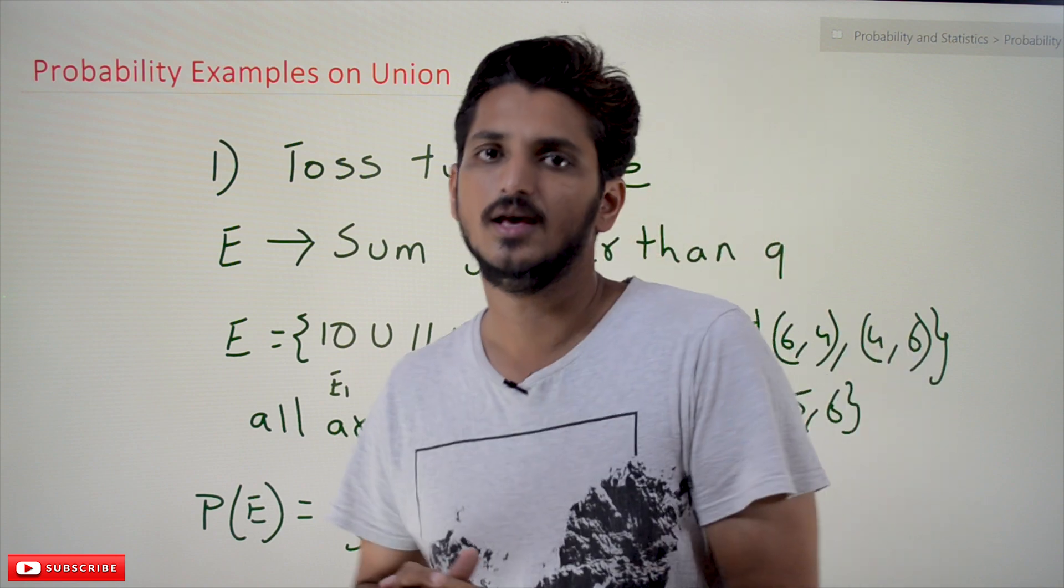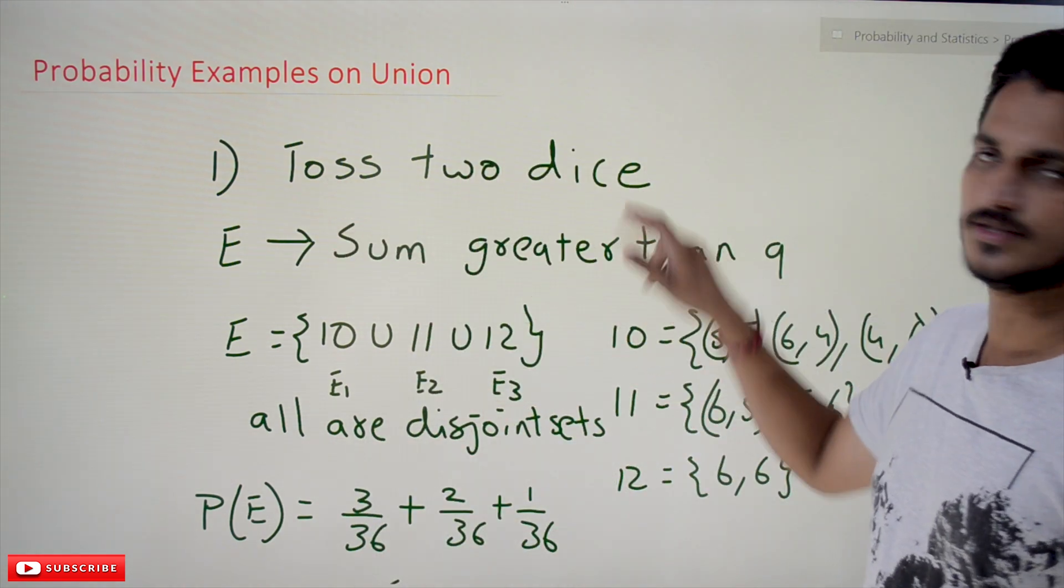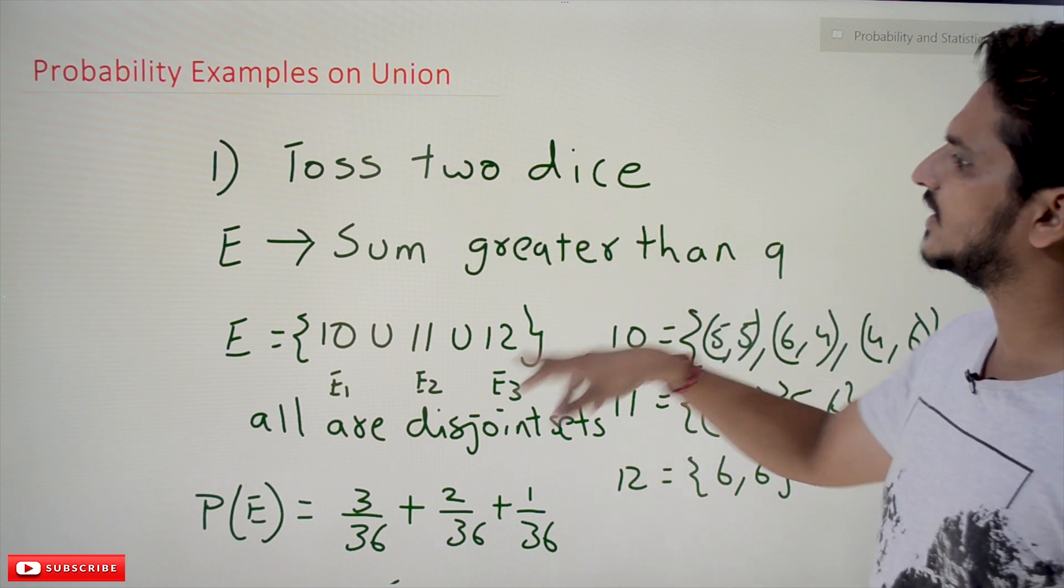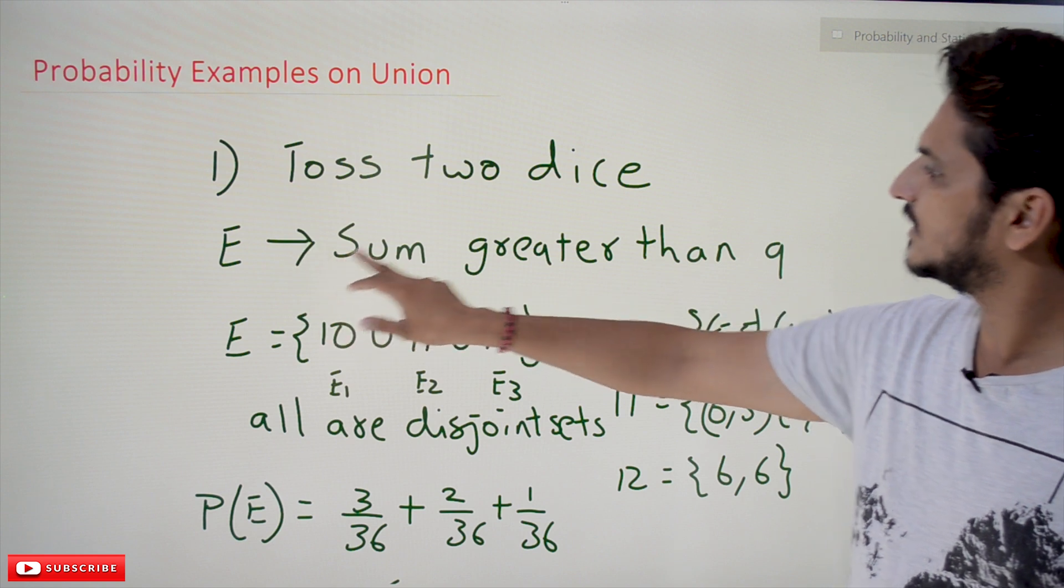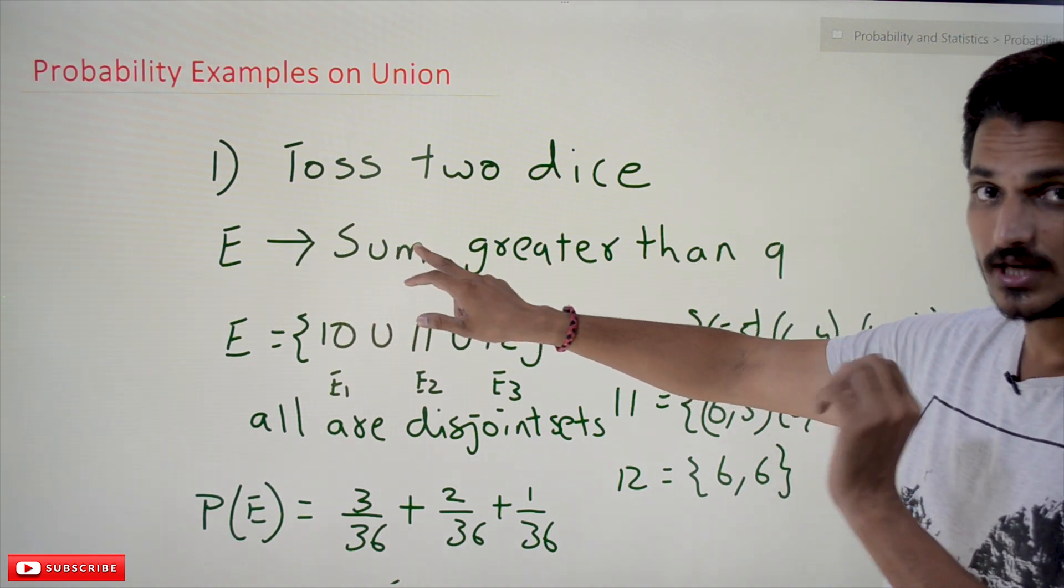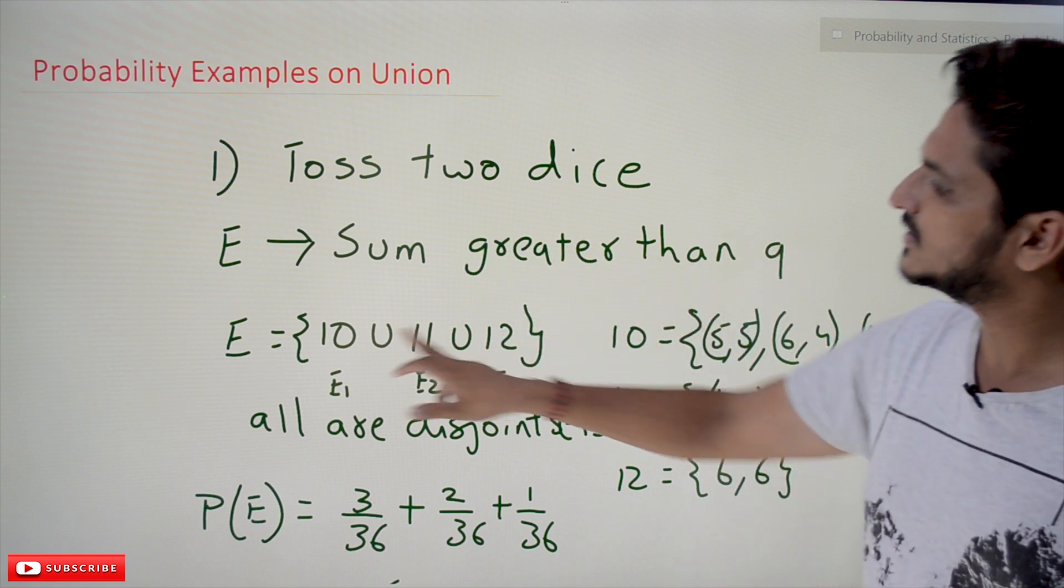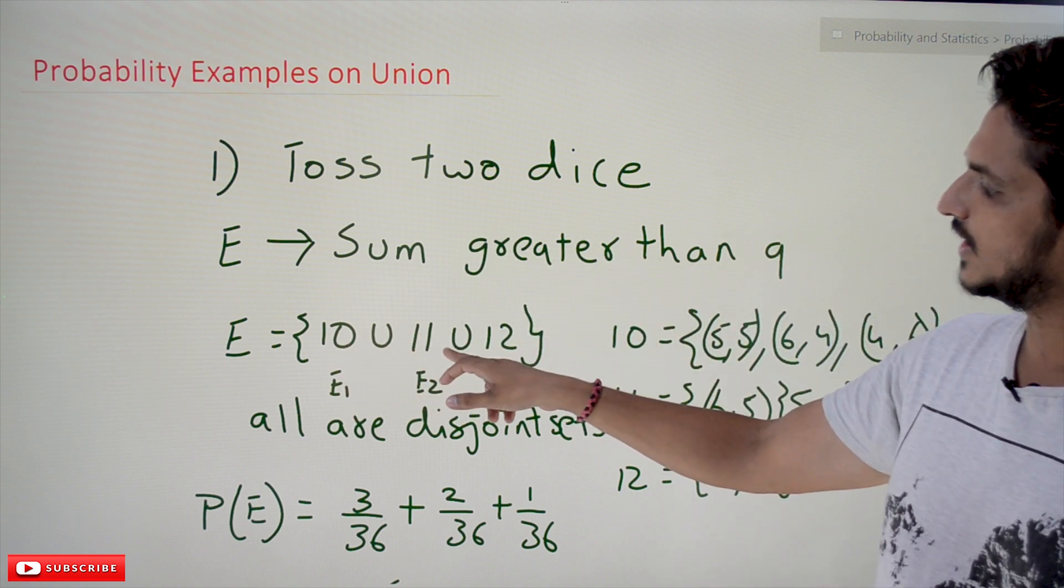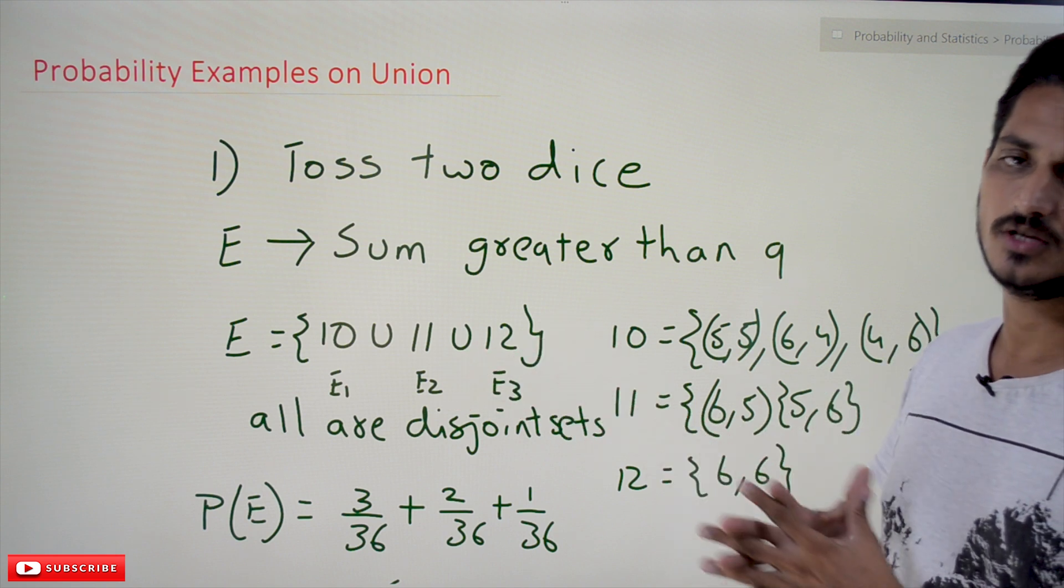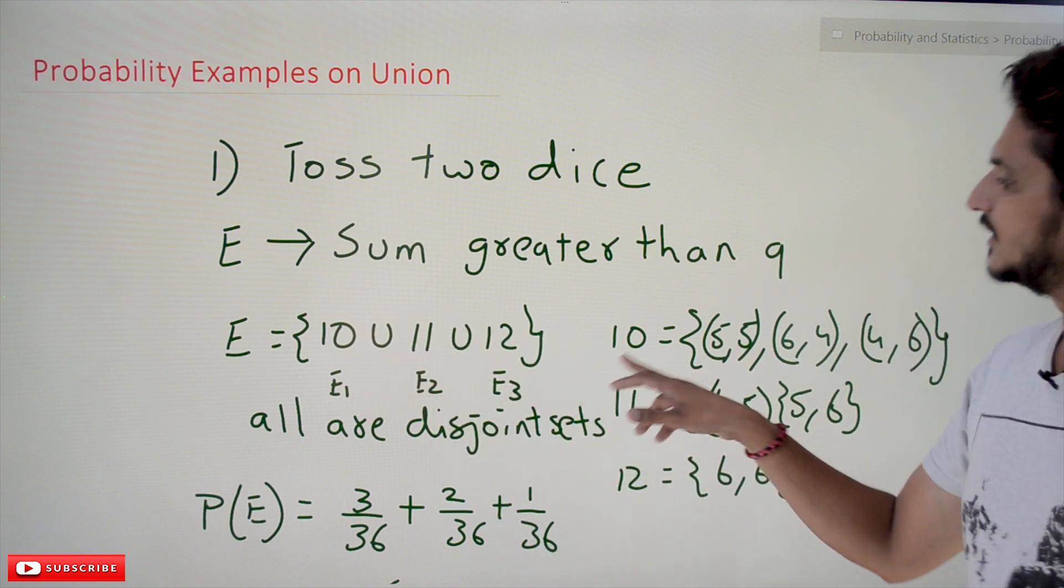Coming to these examples: toss two dice. This is our experiment, tossing two dice. E is an event where the sum of the values on the dice should be greater than 9. Greater than 9 means it should be 10 union 11 union 12. Any of these can happen. So 10 union 11 union 12.